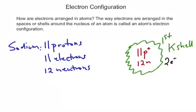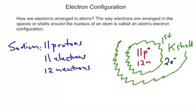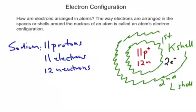Once 2 electrons are put into the first, or K-shell, then it is full — this shell cannot hold any more. So if you have more than 2 electrons for an atom, you've got to move out to the second shell. The second shell, or L-shell, can hold up to 8 electrons before it's full.